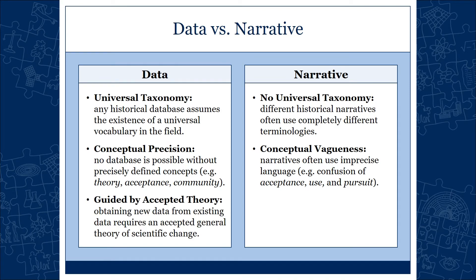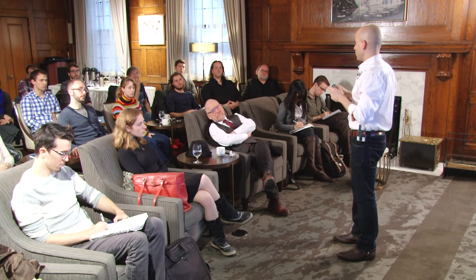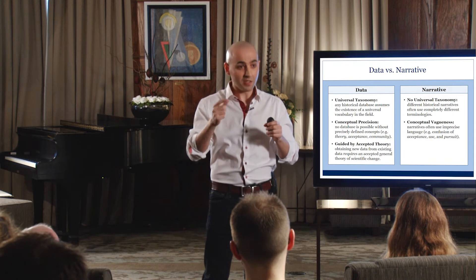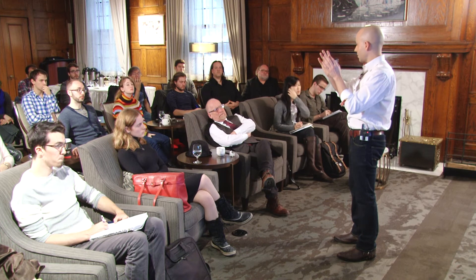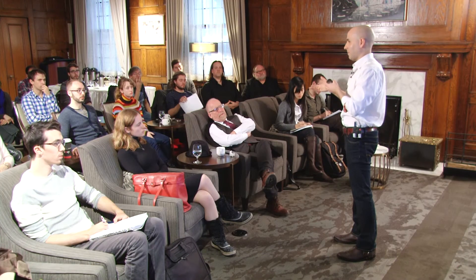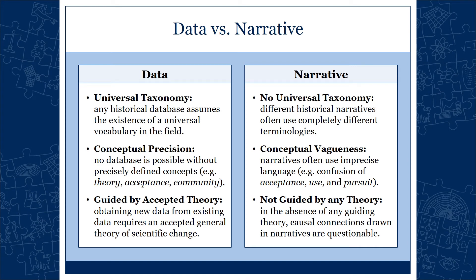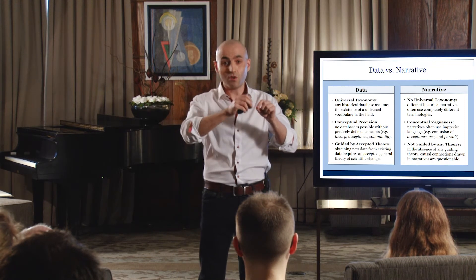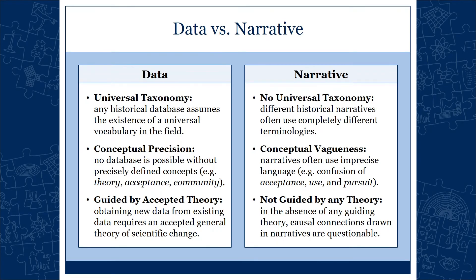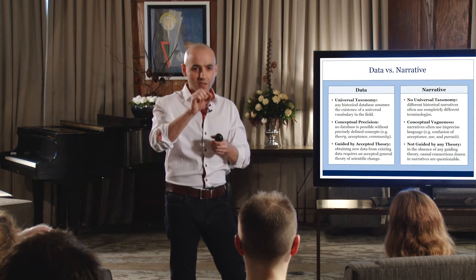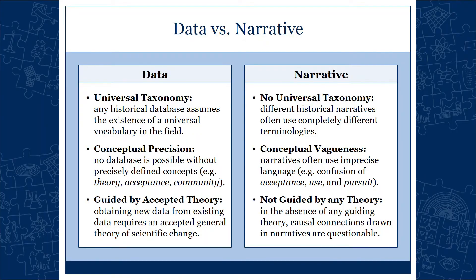Finally, data is always guided by accepted theory — obtaining new data from existing data is impossible without a theory. Think of how astronomers measure the mass of a star: there is no direct way of measuring it, yet it's considered data. They observe directly measurable qualities like brightness and motion, and from those, using accepted theories, they deduce other quantities like mass. Try to do something like that in contemporary narratives — it's almost impossible because you don't have a guiding theory. No piece of evidence lets you connect it to another piece, because the only way you can say 'this leads to that' is if you have a general law.